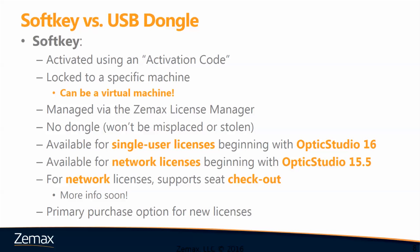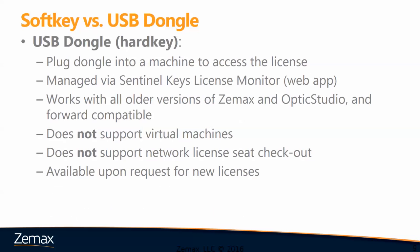Soft keys are the new primary purchase option for new licenses from Optics Studio 16 moving forward. The USB dongle or hard key must be plugged into the machine in order to access the license. It is a physical key, so after your purchase we must ship it to you, and there is some time delay versus the soft key that can arrive instantaneously in your inbox. We manage the hard key in the Sentinel Keys license monitor, which is a web application. It works with all older versions of both ZMAX and Optics Studio and is forward compatible, but the hard key does not always support virtual machines and does not support network license seat checkout. The hard key is available upon request for new license purchases.